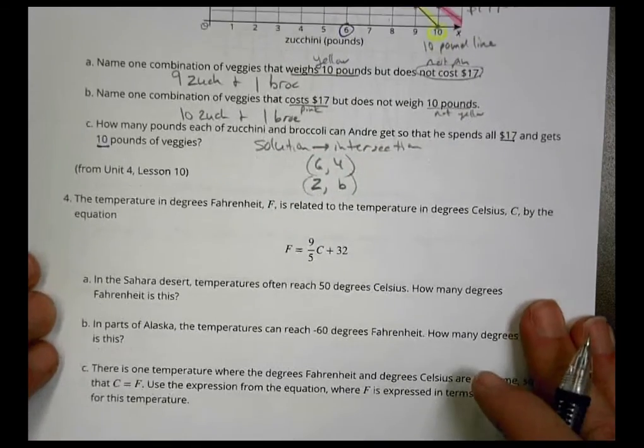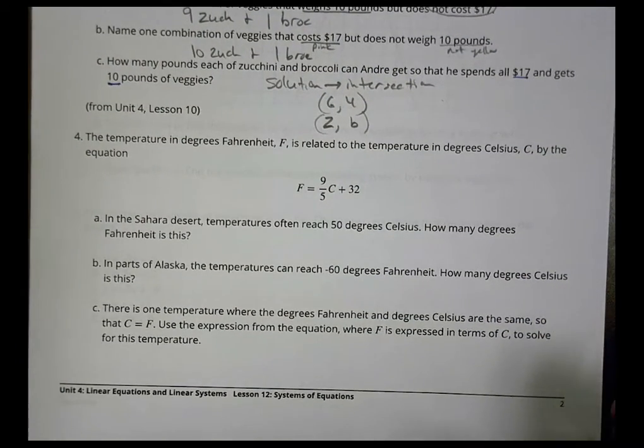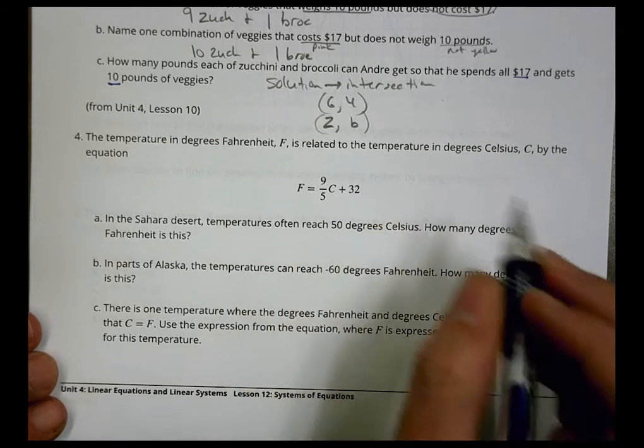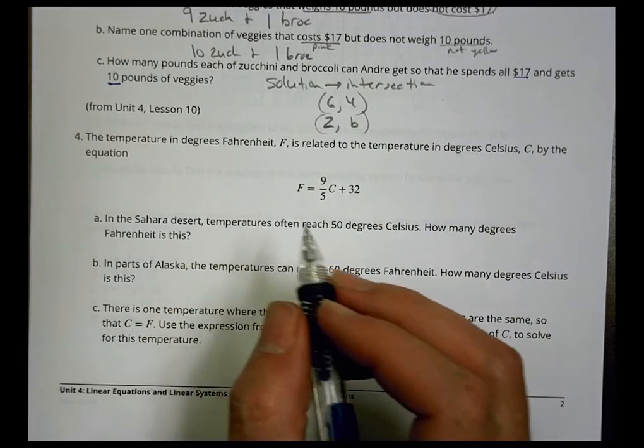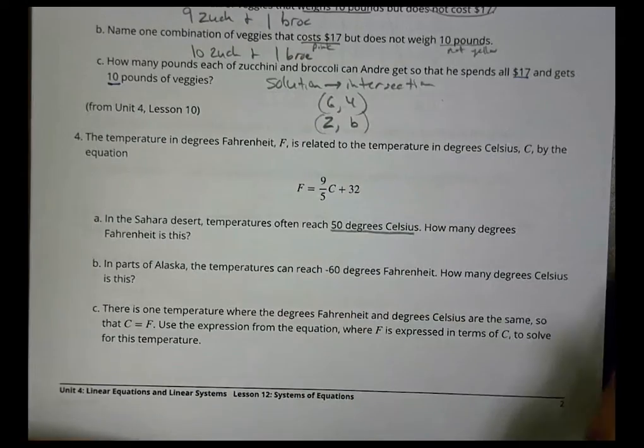Number 4. It says the temperature in degrees Fahrenheit, F, is related to temperature in degrees Celsius, C, by the equation F equals 9/5 C plus 32. In the Sahara Desert, temperatures often reach 50 degrees Celsius. How many degrees Fahrenheit is this?